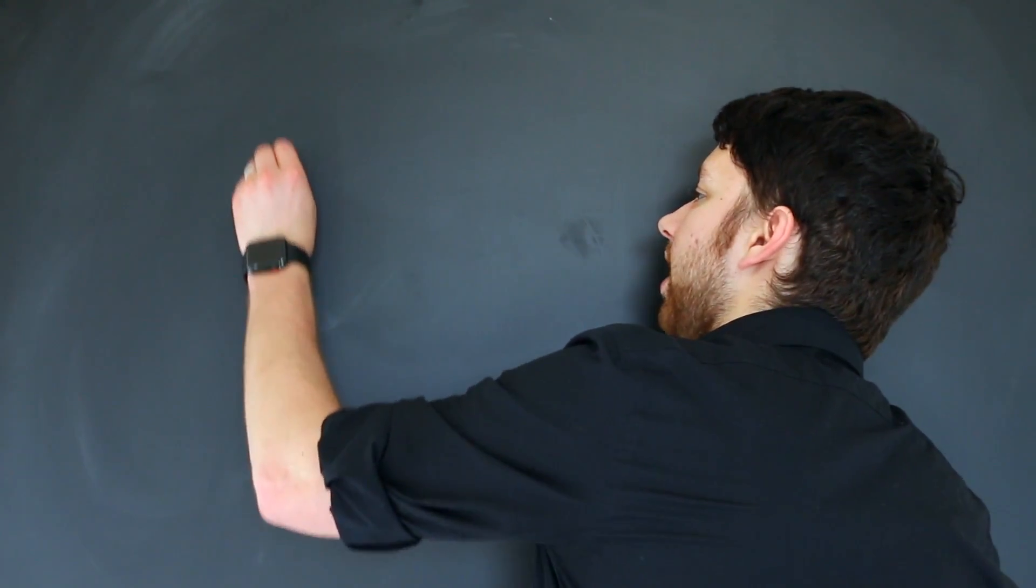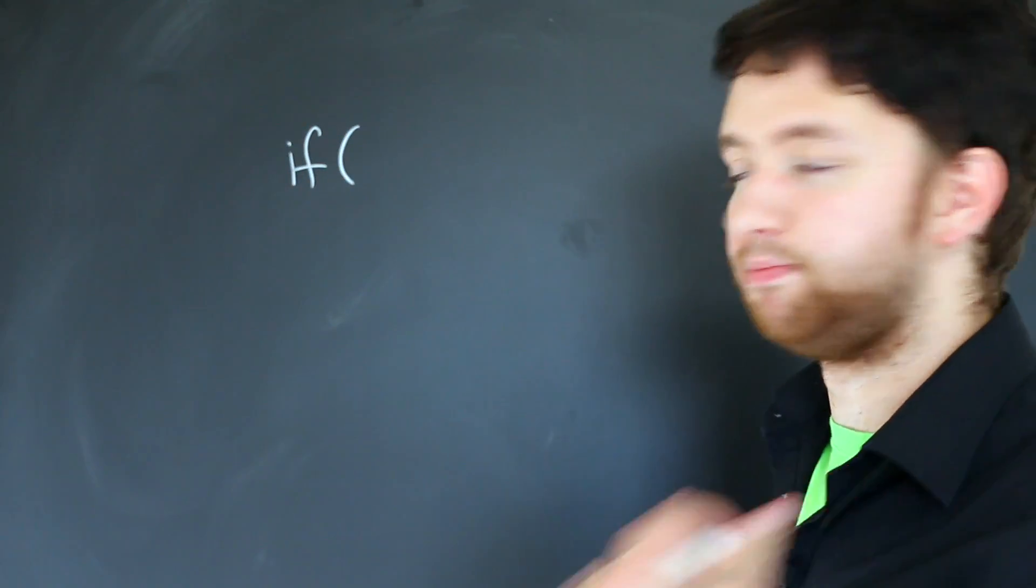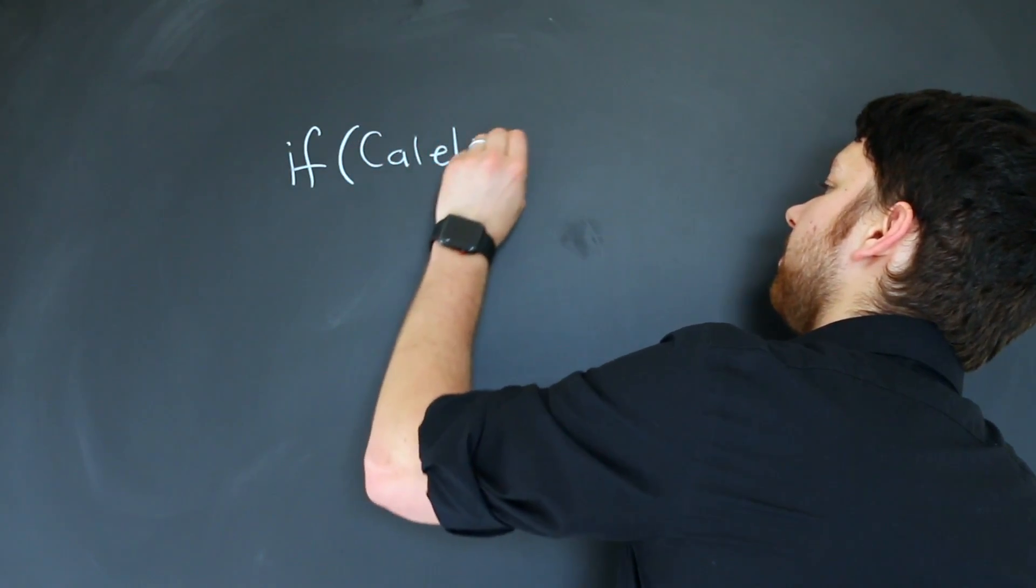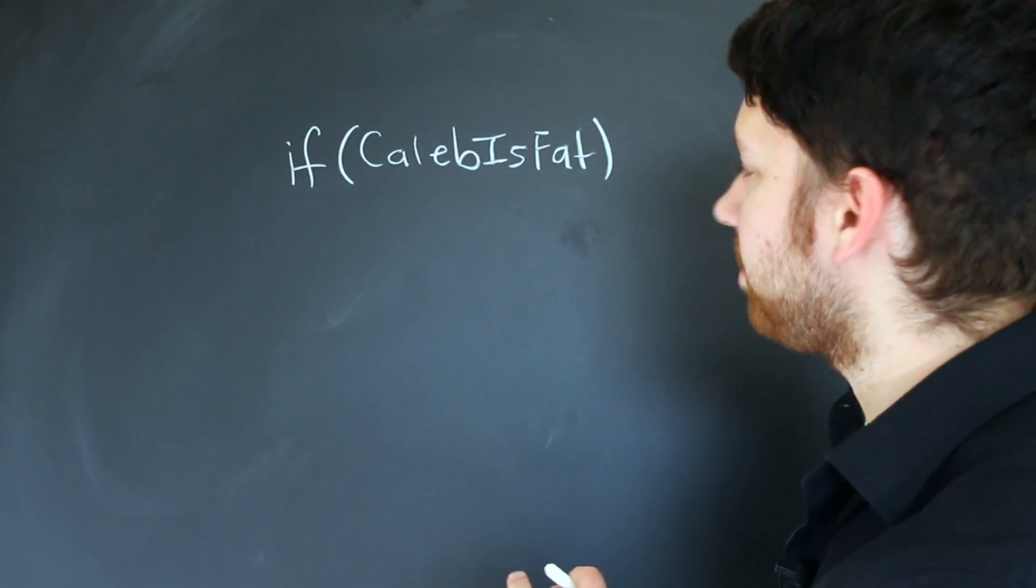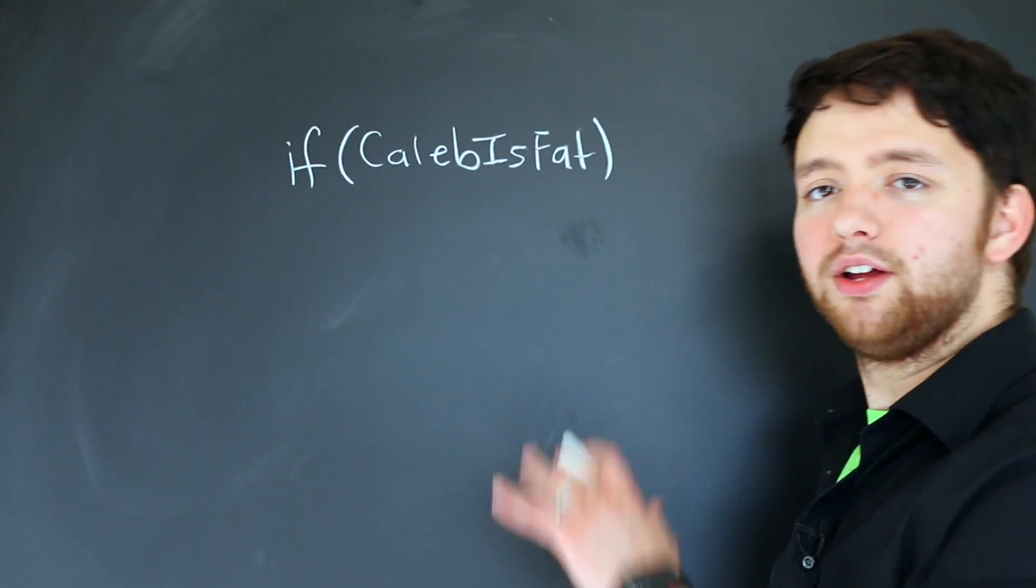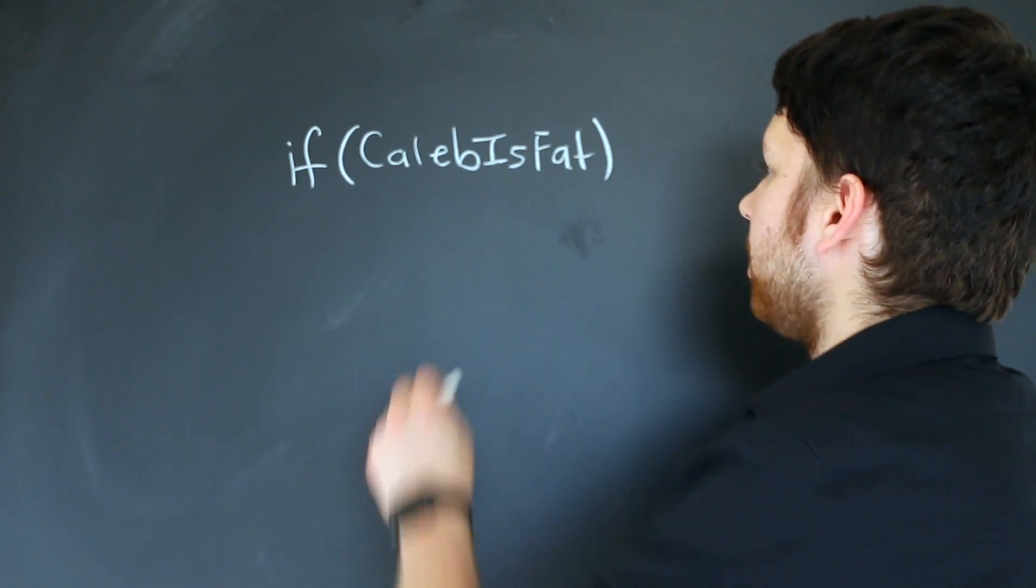To make this easy, we're going to first look at the easy cases. For example, if we had an if statement and inside of the parentheses we just put a boolean variable such as 'caleb is fat', whether that's true or false is a little subjective, but this can kind of illustrate how an if statement works.